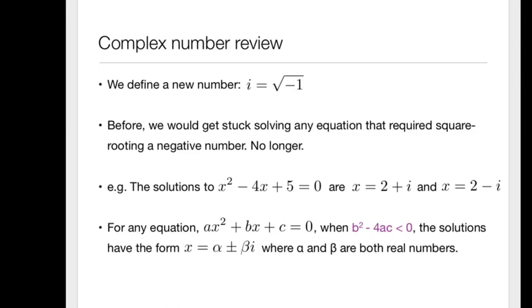So when we have any quadratic equation, when are we going to end up with these complex solutions? Whenever b squared minus four ac, which is underneath the square root sign in the quadratic formula, whenever that quantity is negative,